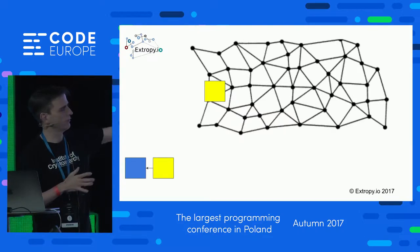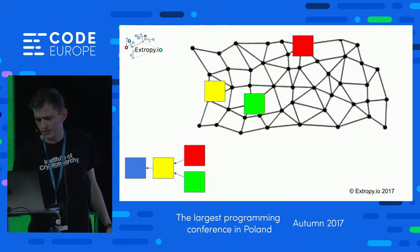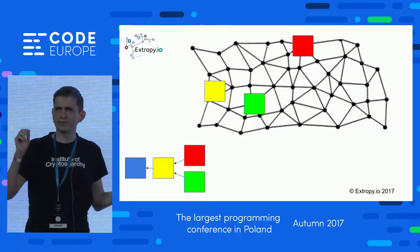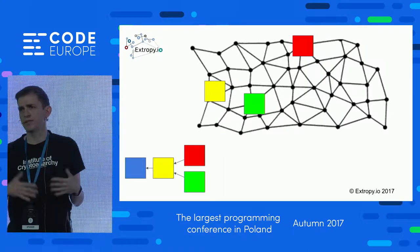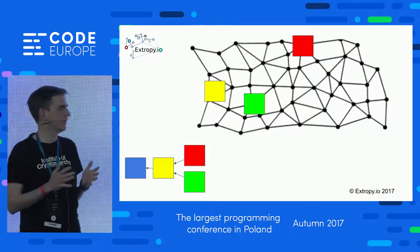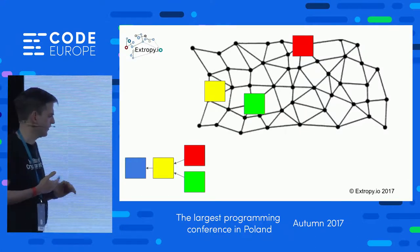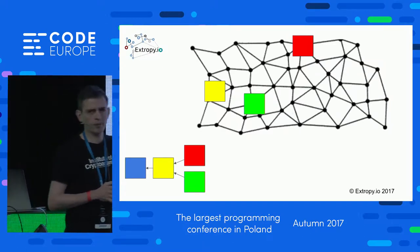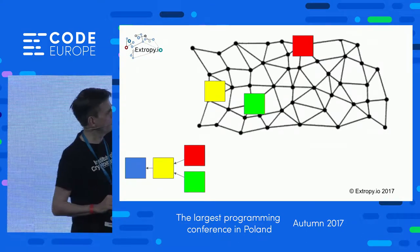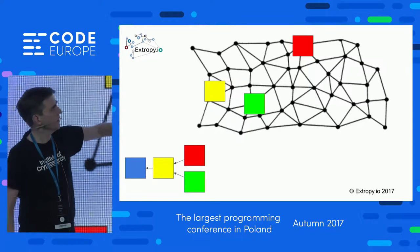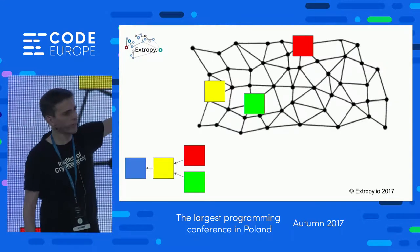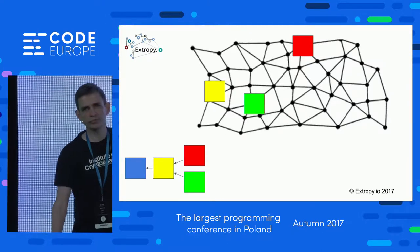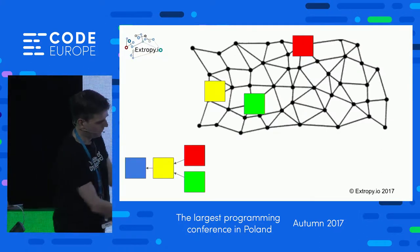Someone produces a block, it gets propagated around the network, people check the nonce and hash value, and accept it as the latest state of the system. But we could have two people winning the race at roughly the same time — one producing a red block, one a green block — and they don't know about each other because there hasn't been time for the blocks to propagate. We have a potential failure in consensus — a fork in our chain.